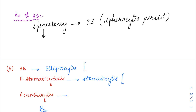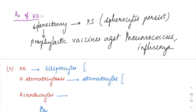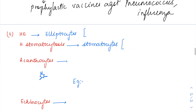If you are doing a splenectomy for any reason, you will have to give prophylactic vaccines against pneumococcus and influenza, because pneumococcus and influenza are normally opsonized and killed in the spleen. If you remove the spleen there is an increased risk of infection by these organisms, so prophylactic vaccines against these two infections must be given whenever performing a splenectomy.